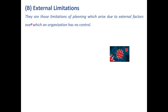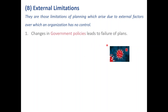External limitations are those limitations of planning which arise due to external factors over which an organization has no control. For example, COVID-19 is an external limitation. Changes in government policies — such as BS4 vehicles being phased out and new norms being introduced — can be a failure of planning. Natural calamities such as floods, earthquakes, and COVID-19 also adversely affect the success of planning.